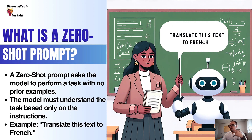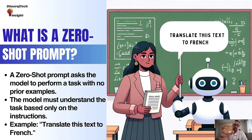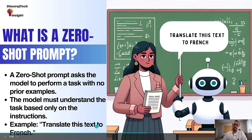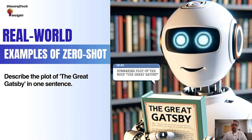Now let's talk about zero-shot prompt. Zero-shot means asking the AI to do something without giving it any examples, as we did in few-shot prompts. It's like giving a student a test without teaching them first — they have to figure it out based on the question itself. In zero-shot, the AI doesn't get any hints or training. It just needs to perform the task based on what it already knows.